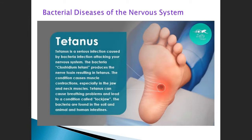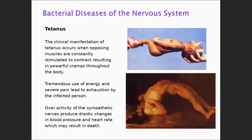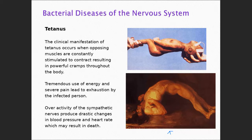Tetanus produces a spastic paralysis — you need to know that. Here you can see an infant experiencing contractions due to the tenospasm it's producing. The toxin causes complete, very aggressive and continuous contractions. This is a famous piece of art showing the effects of tetanus. Tetanus is such a powerful neurotoxin that it's been known to break larger bones like the femur and ribs because of the force of muscle contractions.